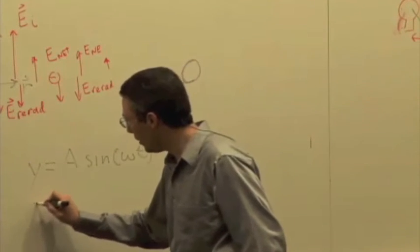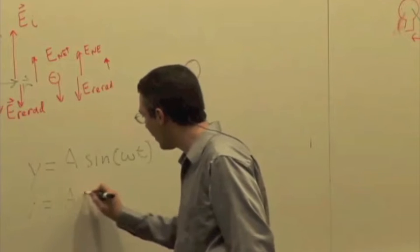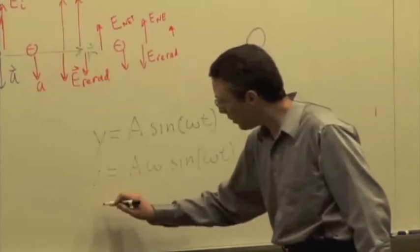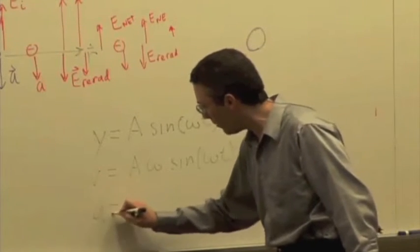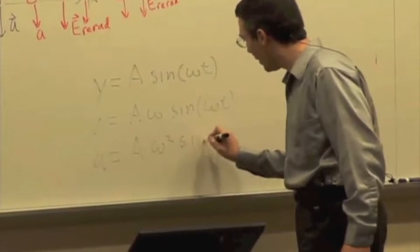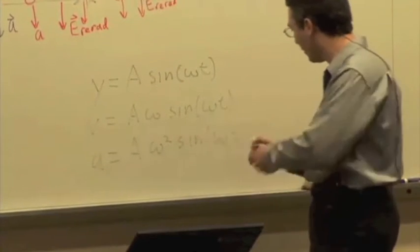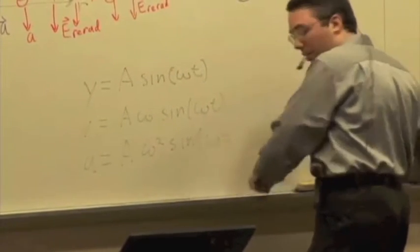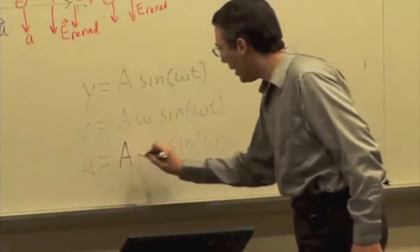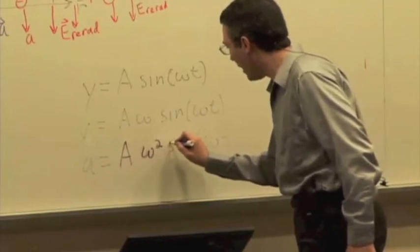So if we take the derivative of the position, we get a factor of omega, which is the angular frequency. If we take the derivative of the velocity, we get another factor of omega, so we have the amplitude times omega squared times sine of omega t. But I have an omega squared here.